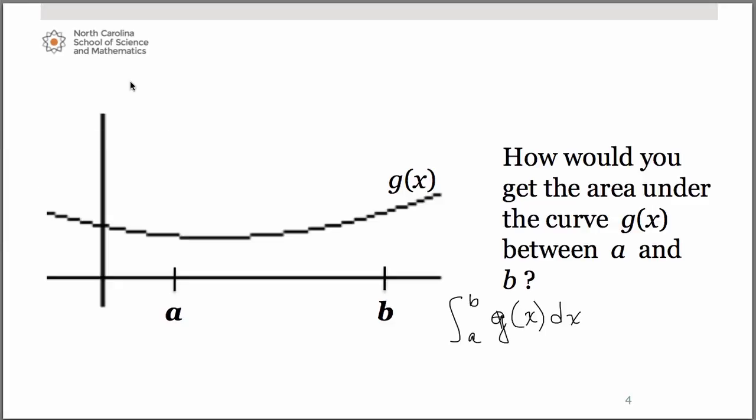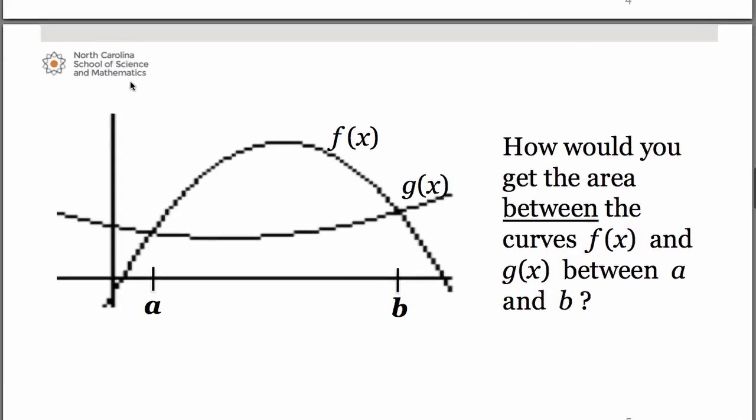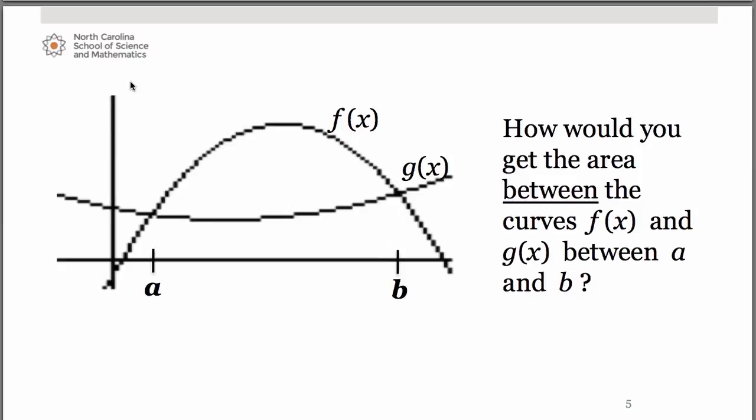So let's now combine the two. So now I want to find the area that's in between f and g. Any thoughts on how we could do that? Think about our circle that was inscribed inside the square.